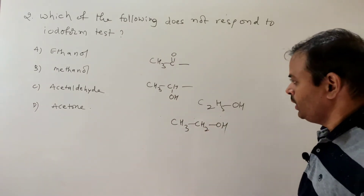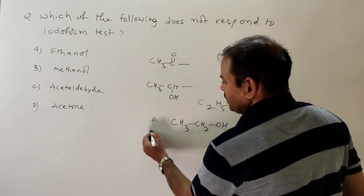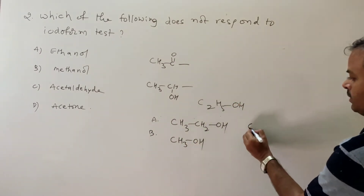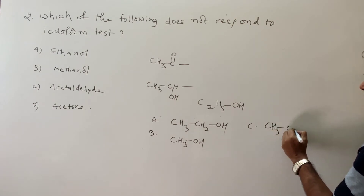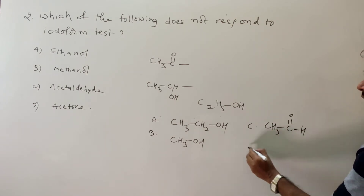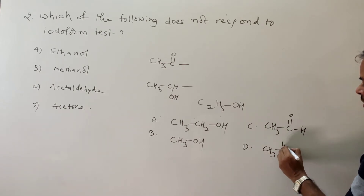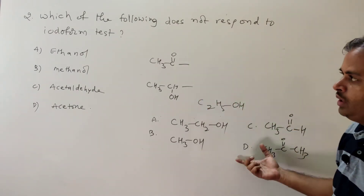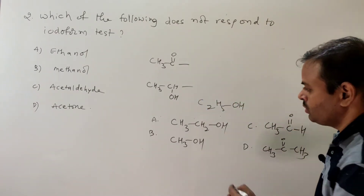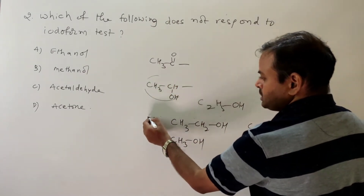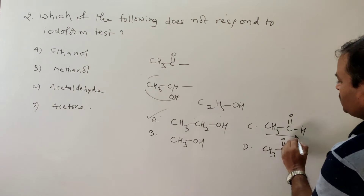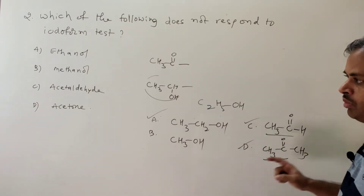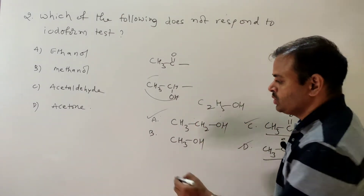Option B is methanol, which is CH3OH. Option C is acetaldehyde (CH3CHO), and we check whether the CH3CHOH or CH3CO group is present in each option. Ethanol has the CH3CHOH group, acetaldehyde has the CH3CO group — both give positive results. But methanol (CH3OH) has neither group.